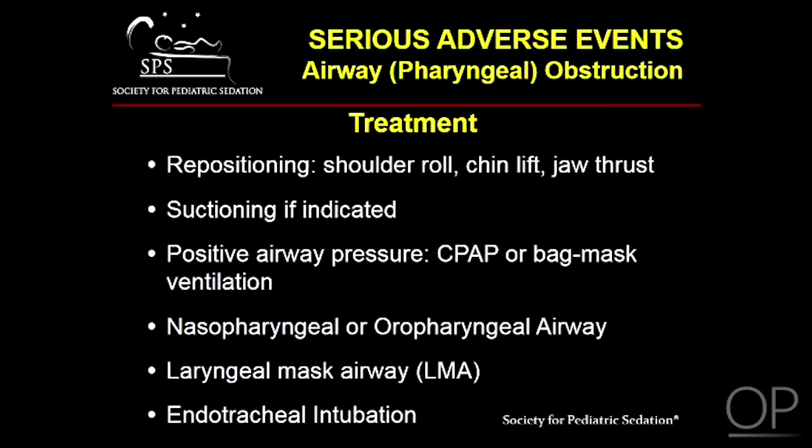First, reposition the airway. This may require the use of a shoulder or neck roll to help align the airway structures. Suctioning may be tried, though it is important to avoid laryngeal stimulation with suctioning, as this may lead to laryngospasm. The next phase involves more significant interventions, such as continuous positive airway pressure or bag mask ventilation. Nasopharyngeal airways or oral airways can also be of assistance in this situation and should be considered.